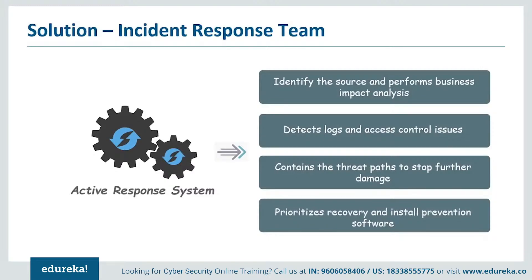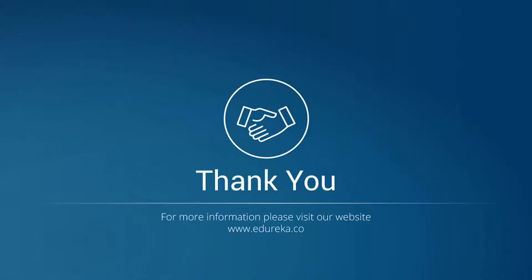Today we have reached a position where cybercrime is so sophisticated it seems almost impossible to prevent. The emphasis is now on how an organization responds once it has been breached. While we can't prevent every incident, we can control how we manage the aftermath so that we are prepared and practiced in the process of response. This is it for the session — I hope it was informative. If you have any doubts or topics you want to discuss related to cyber security, please post them in the comment section below.